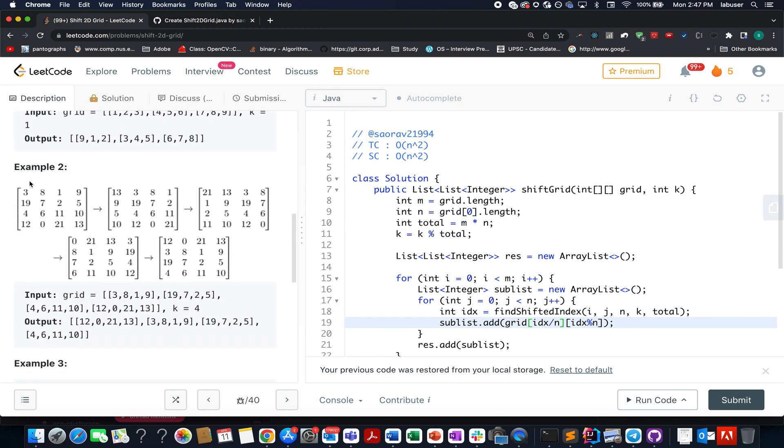And to understand the question, example number 2 is most appropriate one. Here they have provided us with this grid, the value of k happens to be 4. So as you can see after the first shift, the updated grid is something like this. This 13 got updated here and all the elements moved by one unit towards the right. Similarly the entire grid moved one unit towards the right.